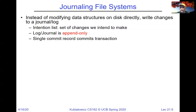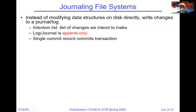Journaling file systems are exactly that. Instead of modifying all the data structures on disk directly, we write our intention to make changes in the log first. We put a set of those intentions in there, append the log — it's an append-only record — push that log to disk, and then write a commit. As soon as that commit is pushed to disk, our updates occur atomically. We haven't actually updated the file system yet; the file system needs to look into the journal for things committed but not yet applied, so we get the semantics of an atomic commit.